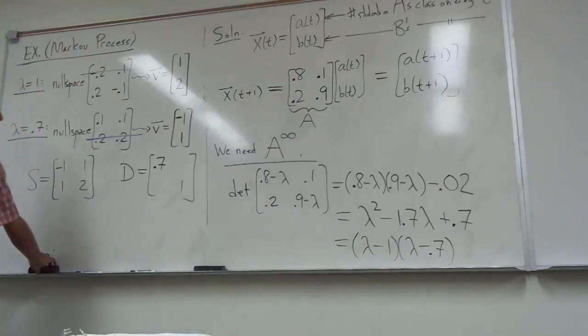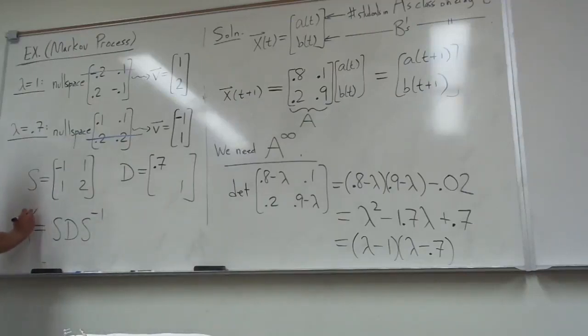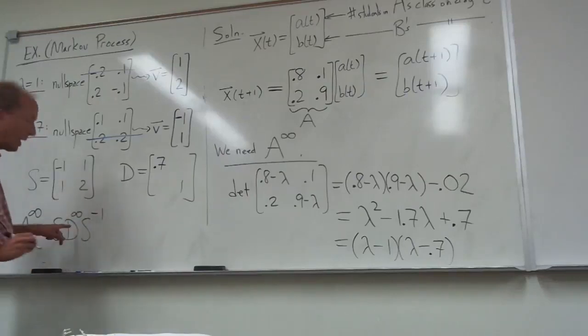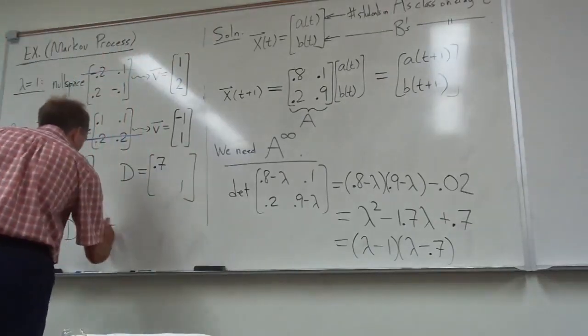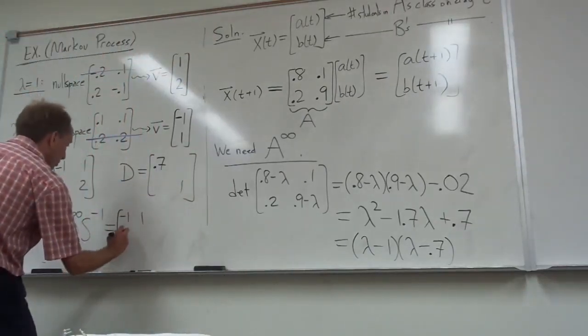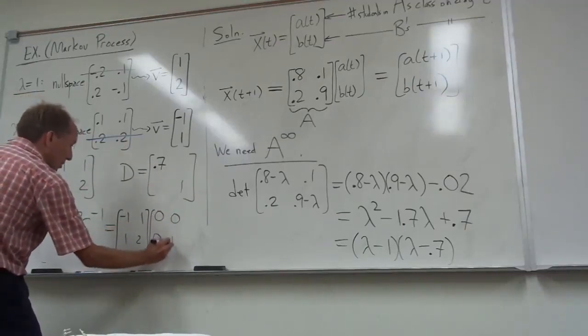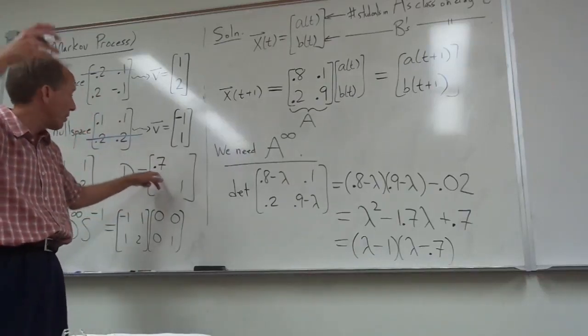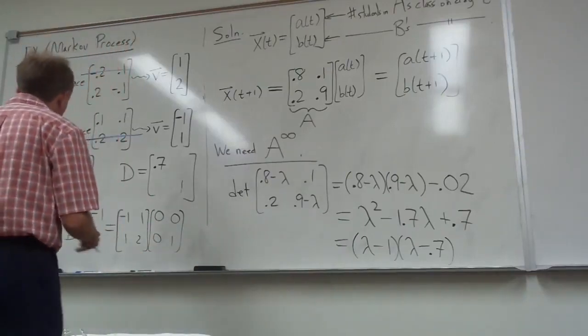So the point now would be that A, remember the formula, A is equal to S D S inverse. Which means that if I want to take a large power of A, it's the same thing as putting a large power of D in the middle. So that's kind of the idea I showed you earlier. So you're going to get S right here. A large power of D is going to be this matrix. 0.7 when you raise it to a huge power becomes 0. 1 to any power is still 1.